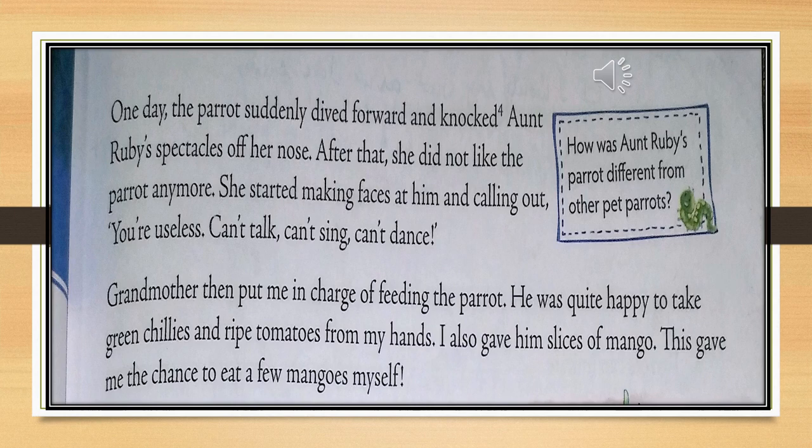There is a question in the box: How was Aunt Ruby's parrot different from other pet parrots? He was not ready to talk — other parrots talk, but he was not ready to talk. So he was different from other parrots.